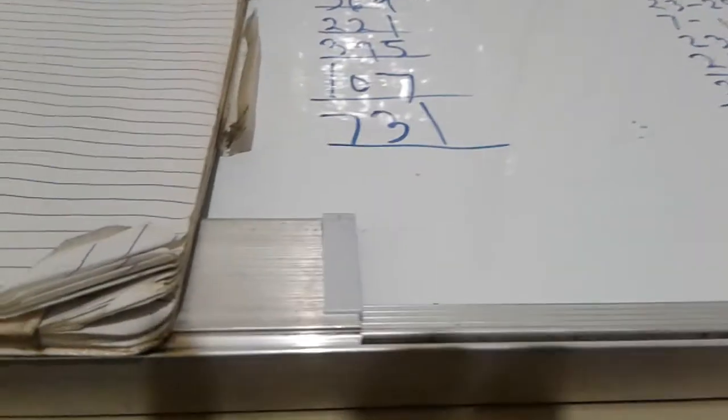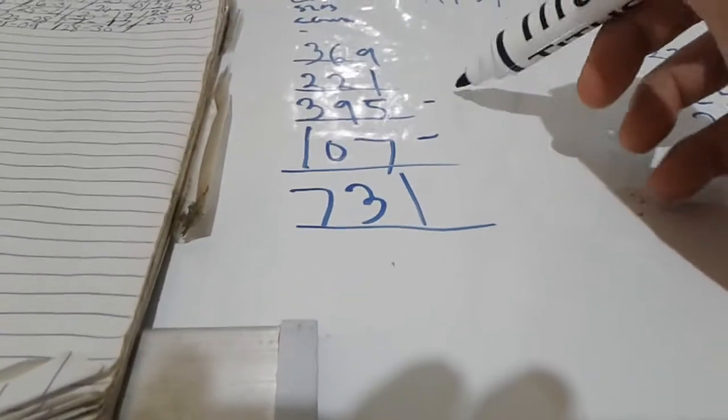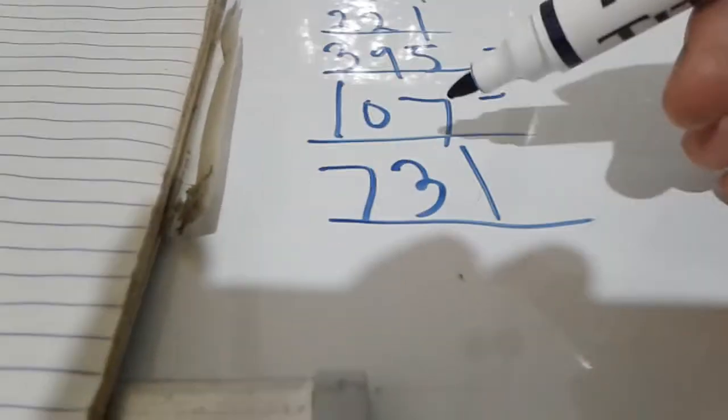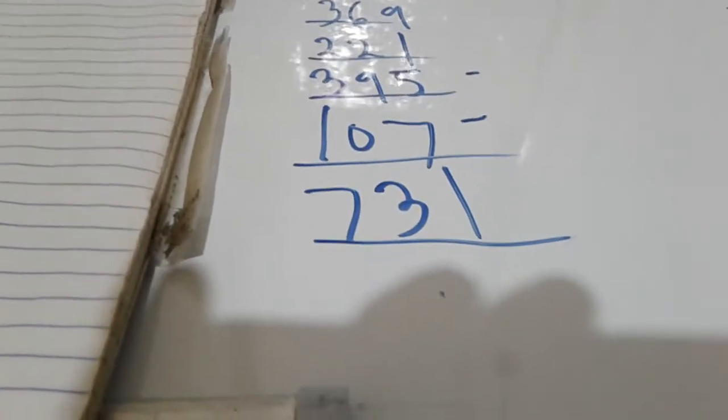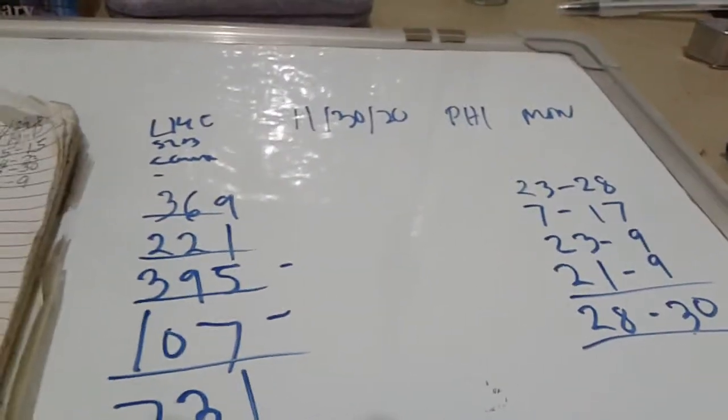We have another day, so 28 to 30. We have to review the results from last night: 395, 70, 107, and 731.